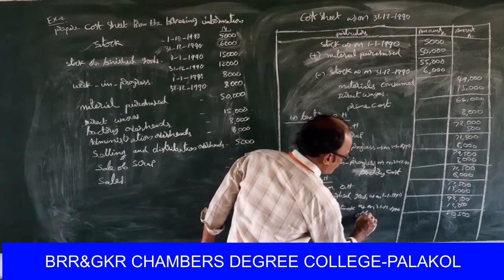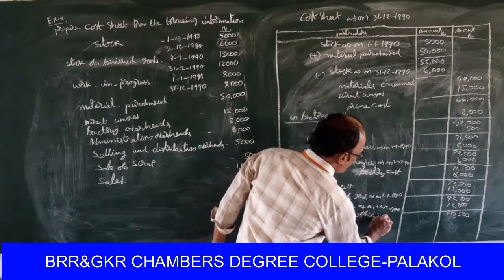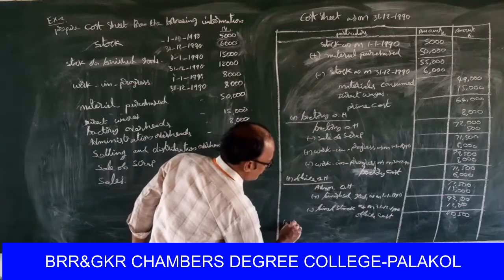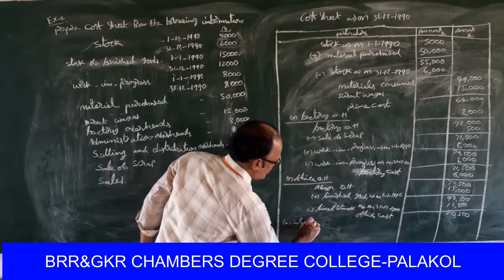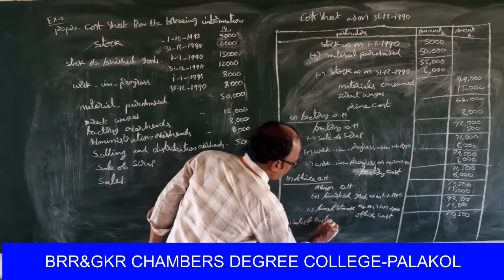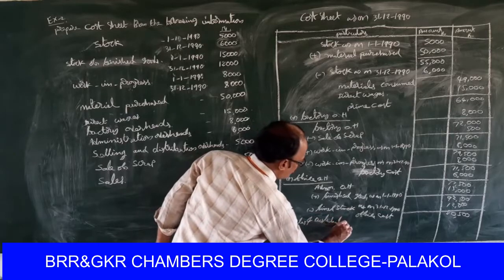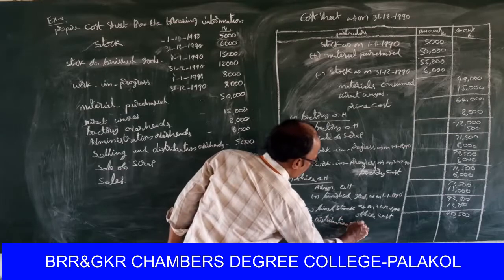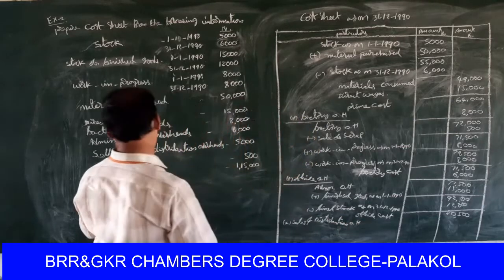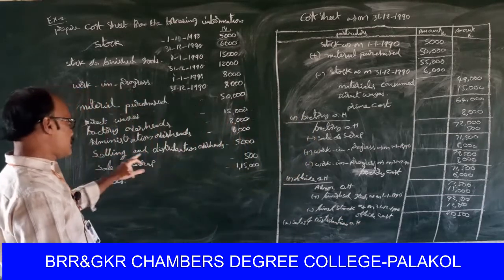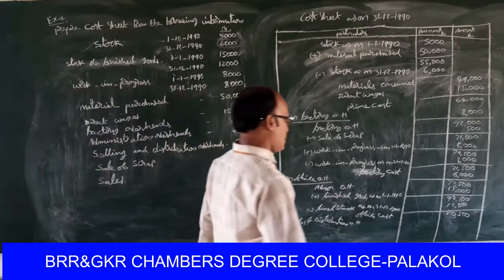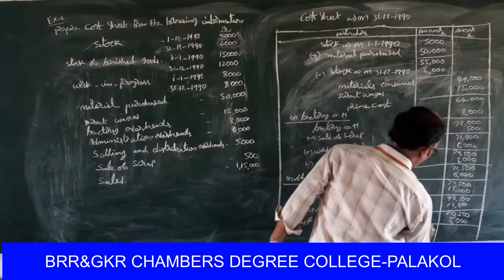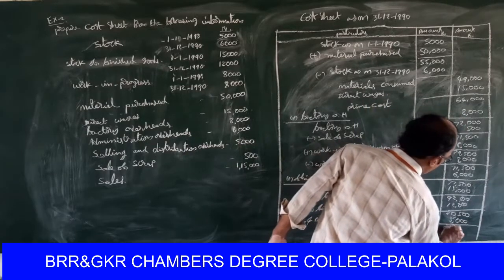This eighty thousand five hundred is treated as office cost. Next, add sales and distribution overheads. Sales and distribution expenses: five thousand rupees. Total is eighty-five thousand five hundred. This is a simple problem.